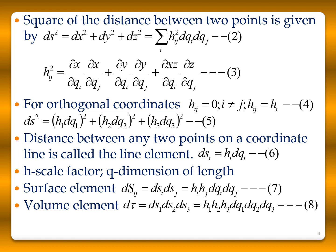When i = j (parallel case), hij = hii. Substituting this into the distance formula gives ds² = (h1 dq1)² + (h2 dq2)² + (h3 dq3)². The distance between any two points along a coordinate line is called a line element, given by dsi = hi dqi. Here h is a scalar scale factor.